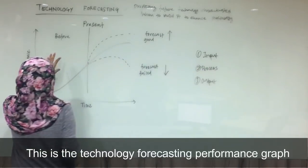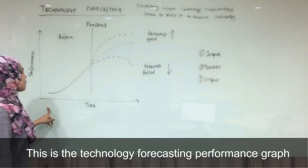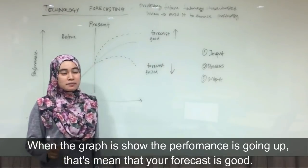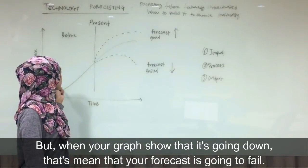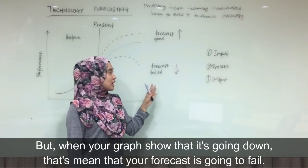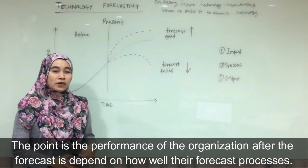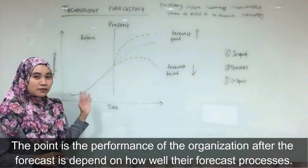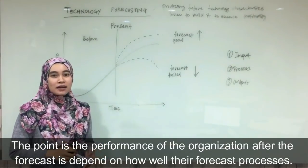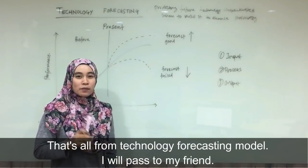This is the Technology Forecasting Performance Graph. When the graph shows the performance is going up, that means your forecast is good. But when your graph shows it is going down, that means your forecast is going to fail. The point is the performance of the organization after the forecast is dependent on how well your forecast processes are. That's all from the Technology Forecasting Model.